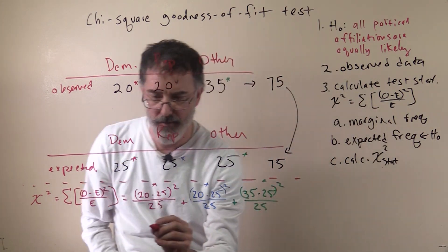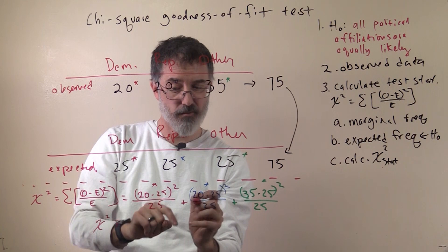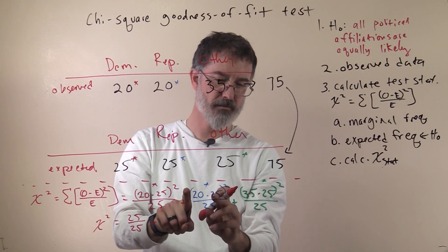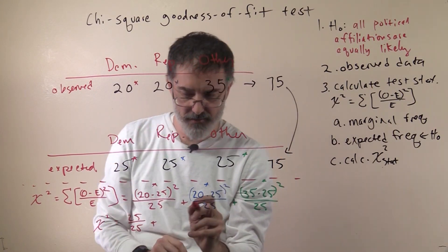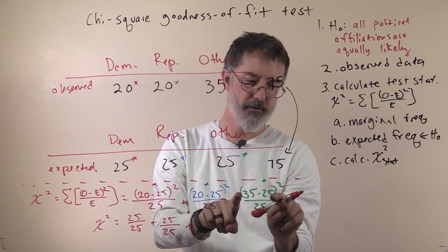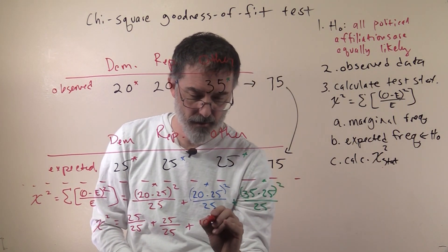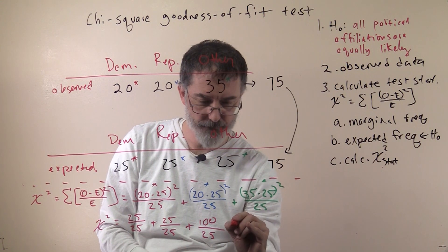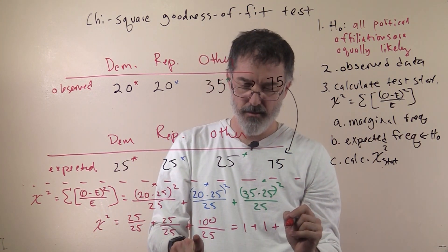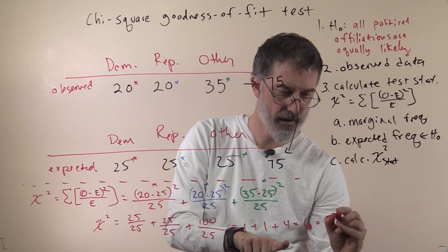Now we just do the math. Chi-square equals: 20 minus 25 is negative 5, squared is 25, divided by 25; plus 20 minus 25 is negative 5, squared is 25, divided by 25; plus 35 minus 25 is 10, 10 times 10 is 100, divided by 25. So 25 divided by 25 is 1, plus 1, plus 100 divided by 25 is 4. Adding all these up: our chi-square statistic is 6.